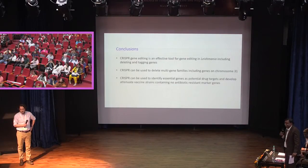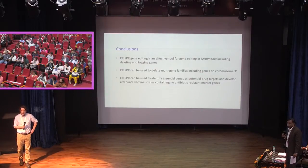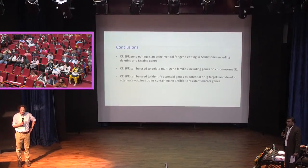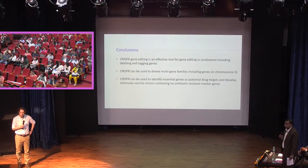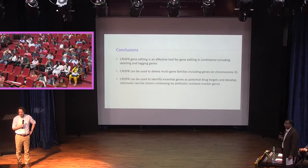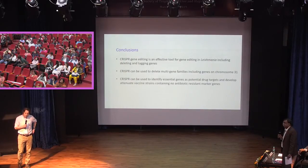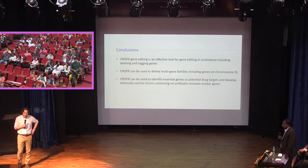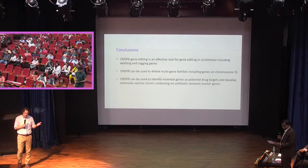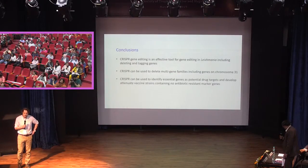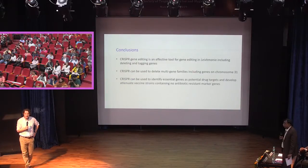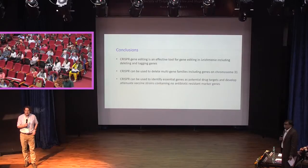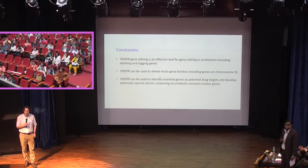Question: The vaccine route will be skin. Since the attenuated parasite also multiplies for some time, will it also create a lesion? Answer: It will be injected intradermally and stays in the skin for several months, during which time it develops the immune response. It doesn't actually cause a lesion — it just stays in the skin without causing one.